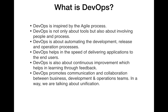DevOps is about automating the development, release, and operation process. Things should be automated — each and every component in the organization should not be done manually. For example, when a developer commits code, they are not supposed to manually push that code to a development or staging server; it should be picked up by a tool automatically.